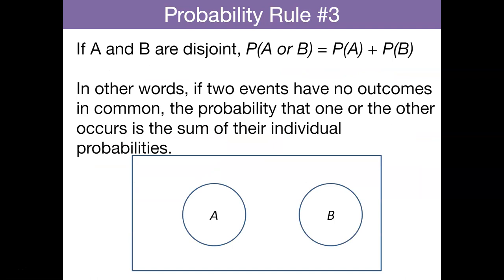The third rule of probability, if A and B are disjoint, the probability of A or B is just the sum of both of those probabilities. In other words, if two events have no outcomes in common, the probability that one or the other occurs is just the sum of all of their individual probabilities. This is also known as the addition rule. The probability of A or B is the probability of A plus the probability of B.